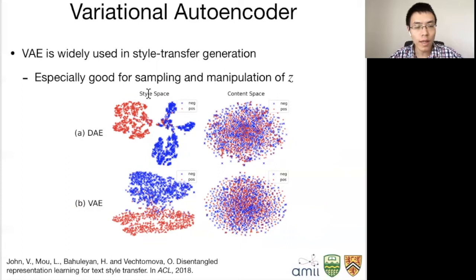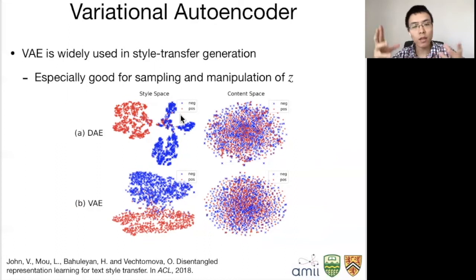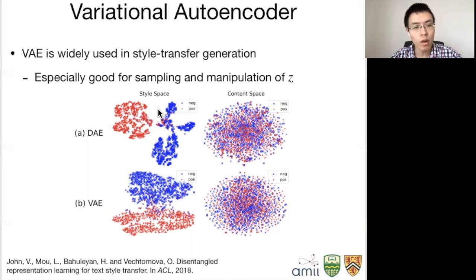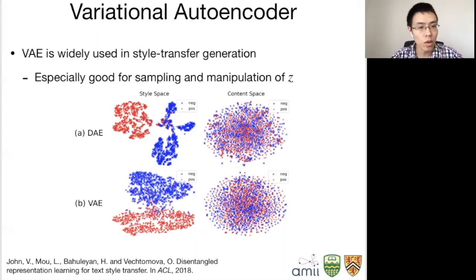We can see that for a traditional autoencoder, the latent space is not regularized — it can be any manifold and is not densely populated. If you want to do style transfer and use a traditional autoencoder, you may end up in an unpopulated region where sentences are corrupted or not fluent. VAE is much more regularized — the latent space is much smoother — which is why VAE is widely used in style transfer.